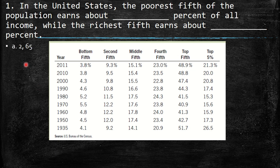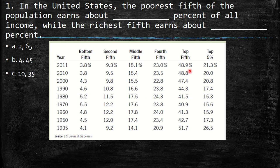The answer choices are: A) 2 and 65, B) 4 and 45, C) 10 and 35, and D) 15 and 25. The bottom fifth is close to 4 and the top fifth is close to 49, so definitely the closest answer is B) 4 and 45.